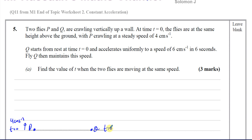At time equals 0, Q is moving at 0 cm per second because it's starting from rest. It starts from rest, and in 6 seconds it reaches a speed of 6 cm per second, then maintains its speed. We're asked to find the value of T when the two flies are moving at the same speed. They will be moving at the same speed when Q reaches 4 cm per second. Q starts off below 4 cm/s, then at some point reaches 4 cm per second, then exceeds it until it reaches 6.